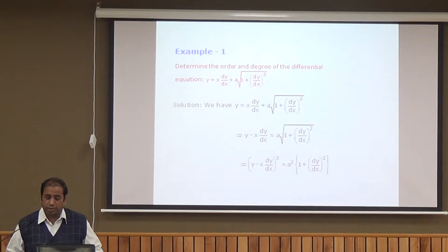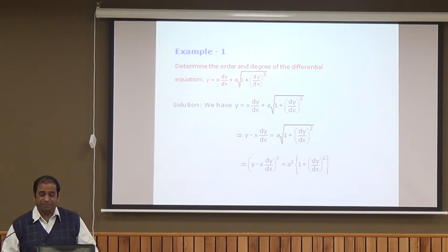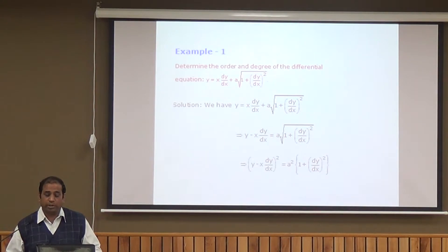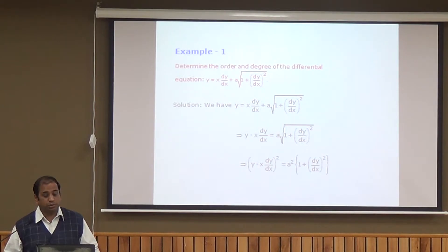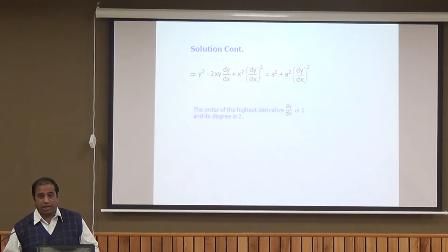Another example: determine the order and degree of y = x dy/dx + a√(1 + (dy/dx)²). We simplify by transposing x dy/dx to the left side and squaring both sides, giving (y − x dy/dx)² = a²(1 + (dy/dx)²). Here the highest order derivative is dy/dx, so the order is 1. The power of dy/dx is 2, so the degree is 2. Therefore order = 1 and degree = 2.